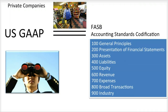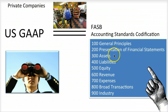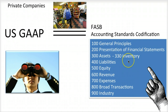Now, if you want to know what current US GAAP for inventory is, you can just look up code 300 for assets, then 330 for inventory. And you have it. In the ASC, each major accounting topic has its own ASC code.